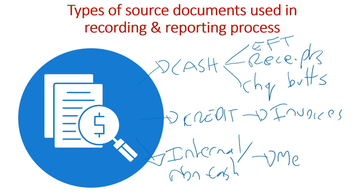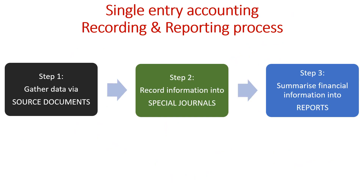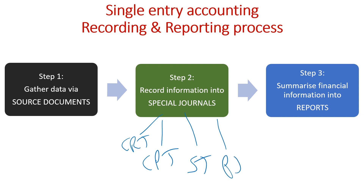They'll typically be internal memos that we make ourselves. It's useful to reinforce the role of source documents in the accounting process — they are inputs. We process this information, if we're doing unit one accounting, into our special journals: our cash receipts journal, our cash payments journal, credit sales journal, credit purchases journal. From that, we'll total up that information and then produce our three reports: cash flow statement of receipts and payments, an income statement, and a balance sheet.